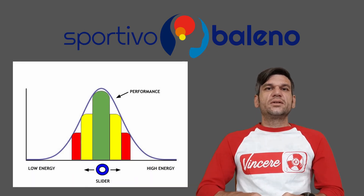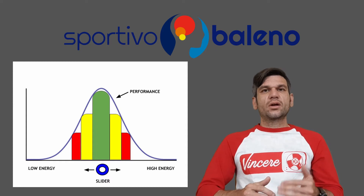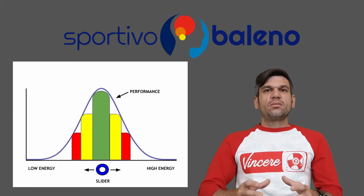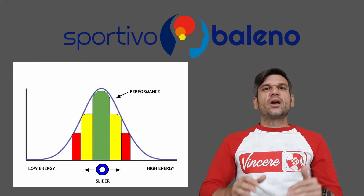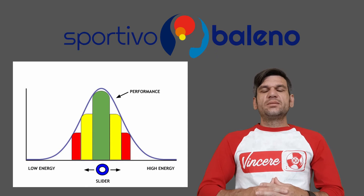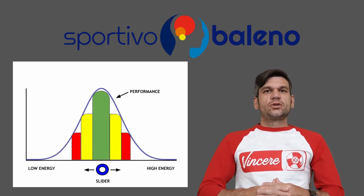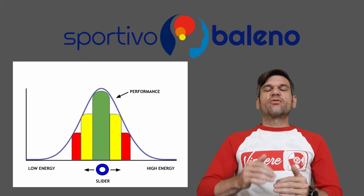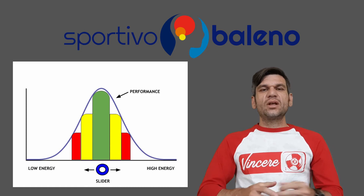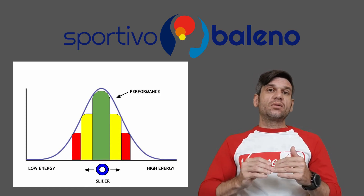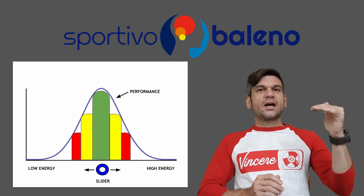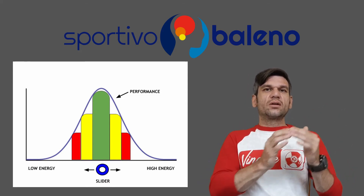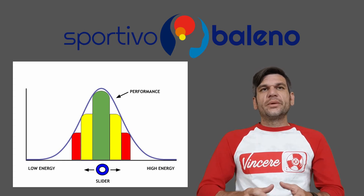This brings us to our first activity: a stoplight approach. We'll color-code green, yellow, and red — green being your top level of performance, yellow being where your performance just starts to waver, and red where your performance really starts to drop off. The bell curve's top represents peak performance, but the bell can shift right or left depending on the individual or the demands of your sport.